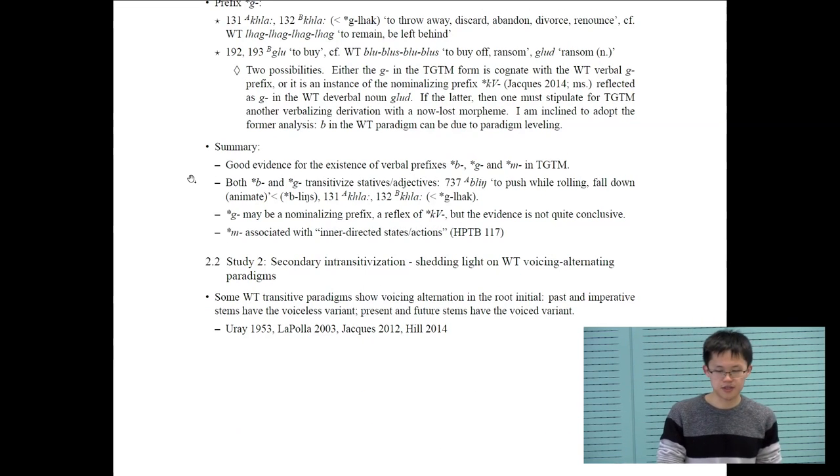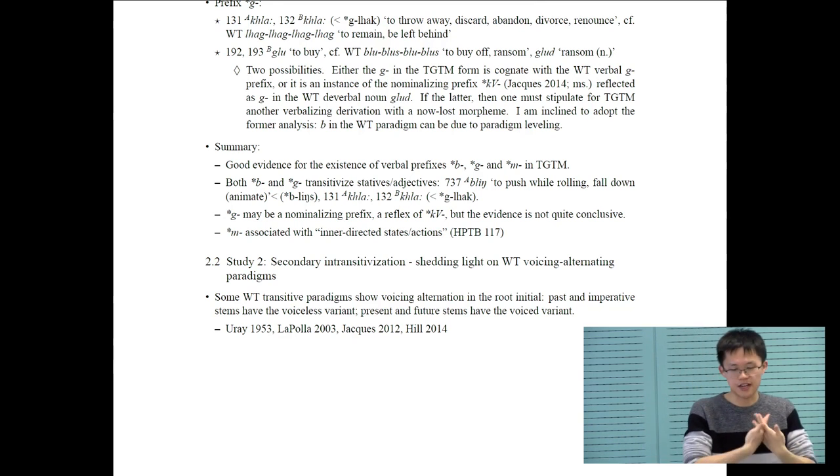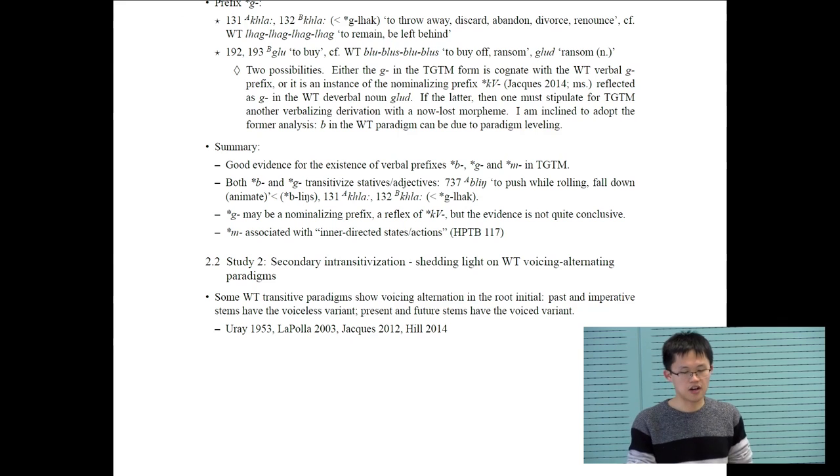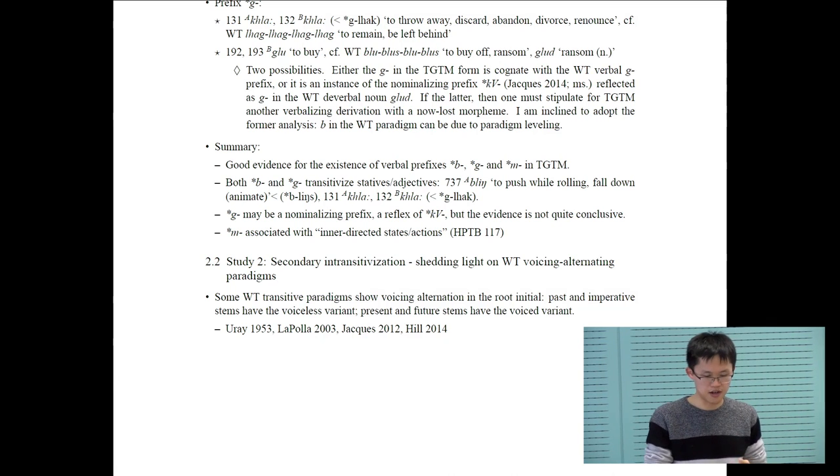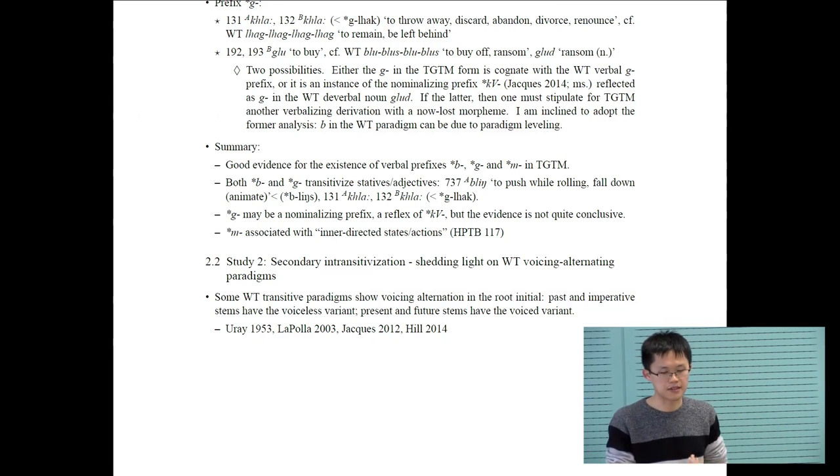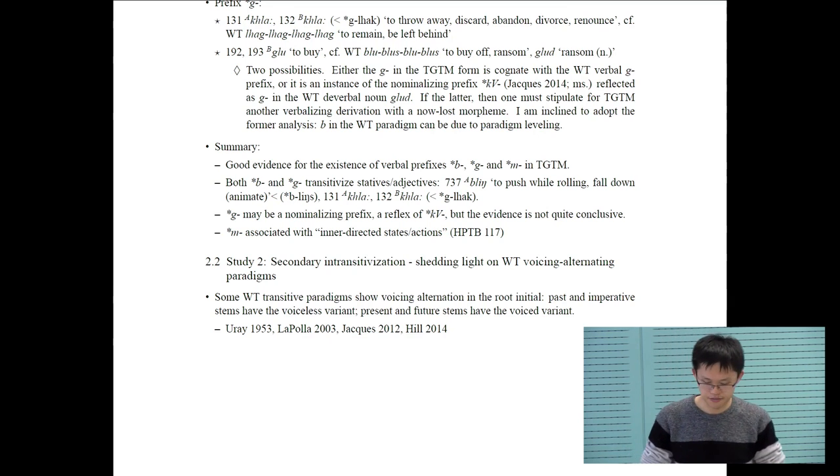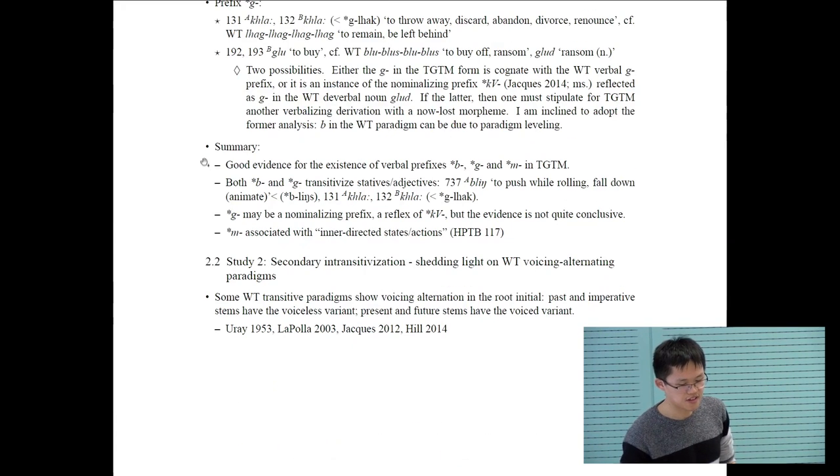Summary of this part: there's good evidence for the existence of verbal prefixes B, G, and M in TGTM in the same forms as they are attested in written Tibetan paradigms. Both B and G are transitivizers. They transitivize statives and adjectives. M is associated with an interdirected state action, a mental state or mental change of state, like to forget.